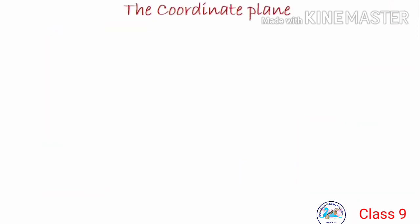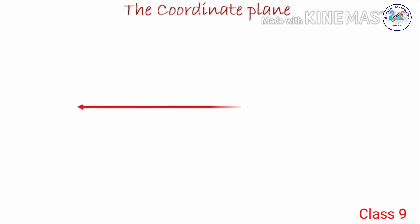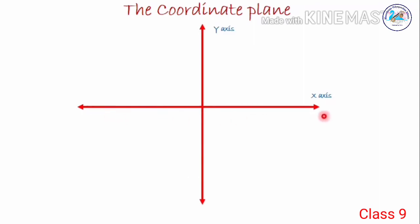Let's discuss more about the coordinate plane. We have already learned that to locate the position of an object or a point in a plane, we require two perpendicular lines. One of them is horizontal and the other is vertical. The plane is called the Cartesian or coordinate plane and the lines are called the coordinate axis. Let's draw the axis. First, we draw the horizontal line and label it as x-axis. Next, we draw the vertical line and label it as y-axis. The point of intersection of both the axes is called the origin, represented by the capital letter O.